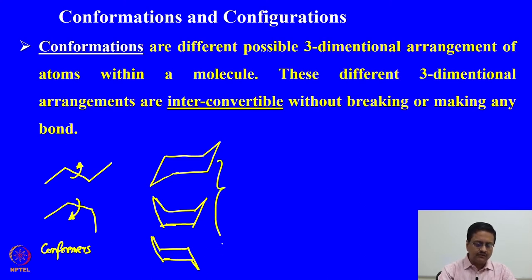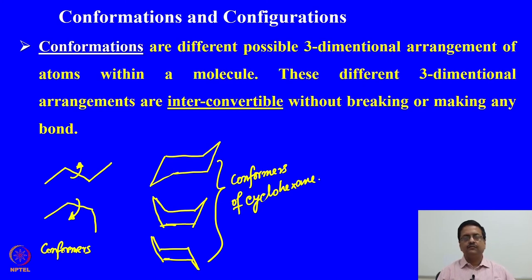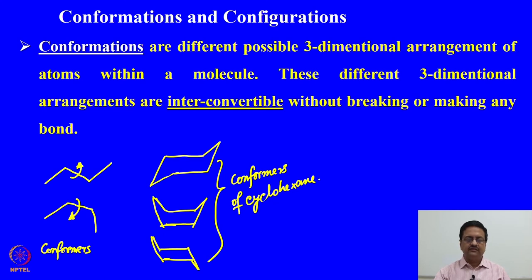These are different conformers of cyclohexane. These different forms can be interchanged by bending or twisting the molecule, and these conformers are temperature dependent. At lower temperature, the conformation with lower energy is more stable, and at higher temperature we start seeing different conformations of a given molecule.